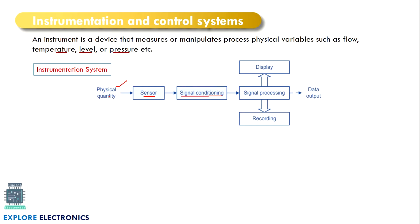Our intention is to sense the physical quantity through the sensor and condition that signal in such a way that it will be required for the next process, so that we will be displaying it in a readable format. The signal conditioning output will be given to the signal processor, which can be any processing unit — it can be a microcontroller. That provides an input to the display, such as a seven segment display, LED, or LCD display. We can also record the value and take it as a data output.